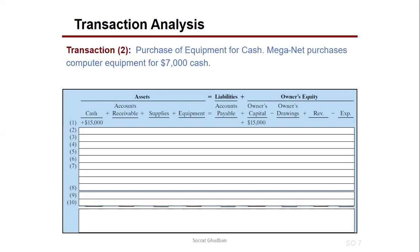Transaction 2 — purchase of equipment for cash: MEGANET purchases computer equipment for $7,000 cash. The company's cash decreased by $7,000, and to acquire the equipment, the equipment account (part of assets) increased by $7,000. So we have minus $7,000 in cash and plus $7,000 in equipment, maintaining equality in the equation.